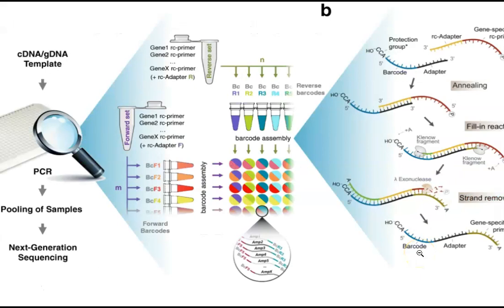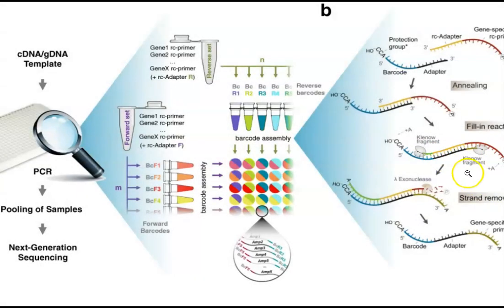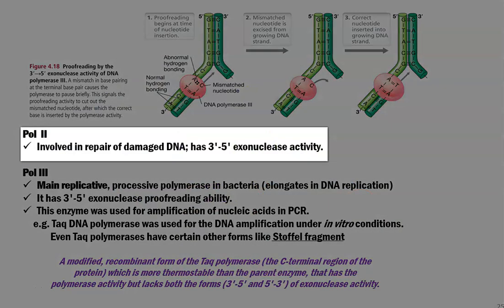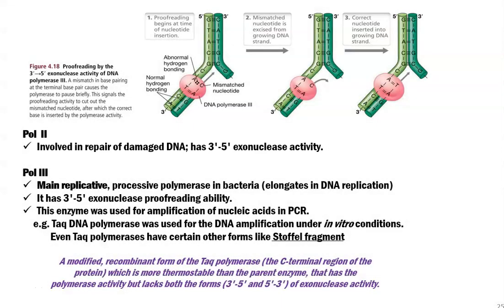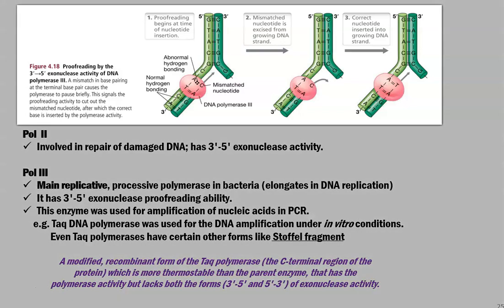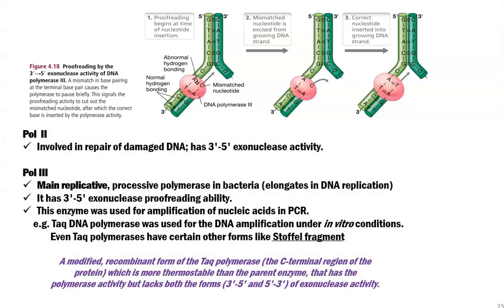The image shows the various steps involved in the sequencing process, particularly next-generation sequencing, where Klenow fragment enzymes have important applications. DNA polymerase 2 is mainly involved in repair of damaged DNA and also has 3'-to-5' exonuclease activity. The diagram on the top explains how exonuclease activity is carried out.